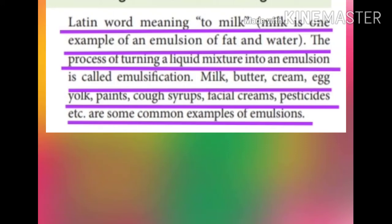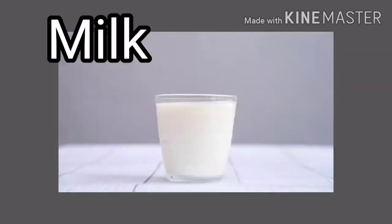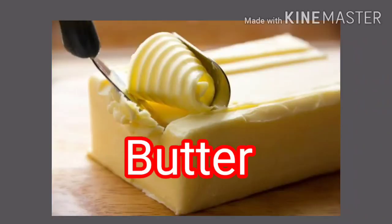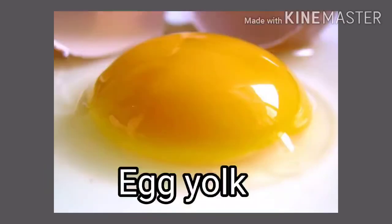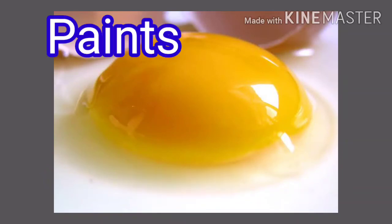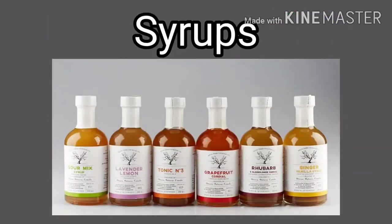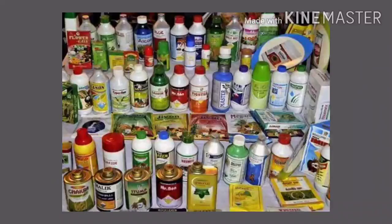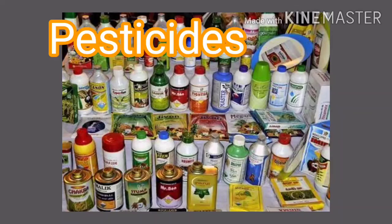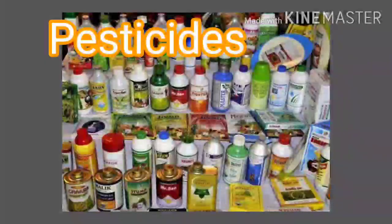The process of turning a liquid mixture into an emulsion is called emulsification. Some common examples of emulsions are milk, butter, cream, egg yolk, paints, cough syrups, facial creams, and pesticides.